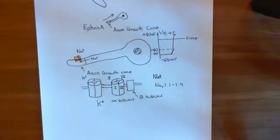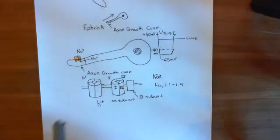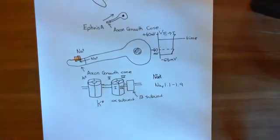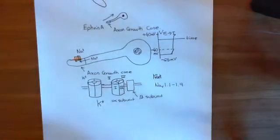Welcome back to the second video on EphrinA, axon growth cones and retinal ganglion cells. I've turned on another light — it's still quite blue, because the sky has turned a beautiful blue colour outside. I can't do anything about the sky's colour, but we'll press on anyway.